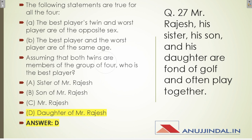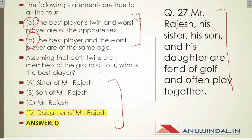Question twenty-seven: Mr. Rajesh, his sister, his son, and his daughter are fond of golf and often play together. Two conclusions are given and you need to find which option contains both. The best player's twin and the worst player are of the opposite sex, and the best player and the worst player are of the same age. Both conclusions apply to only one option — that is the daughter of Mr. Rajesh.